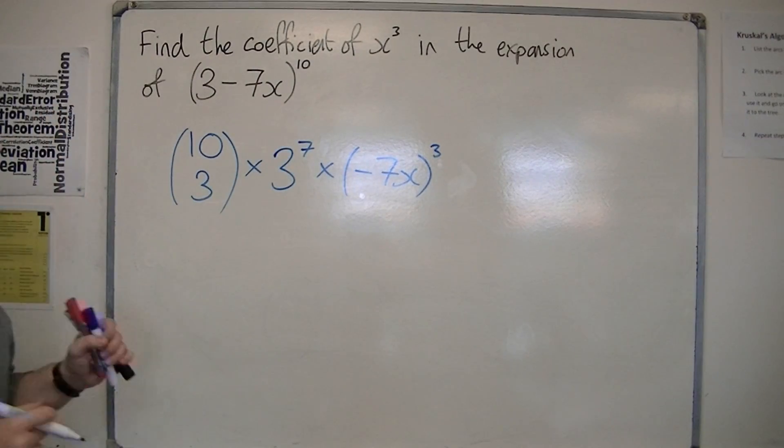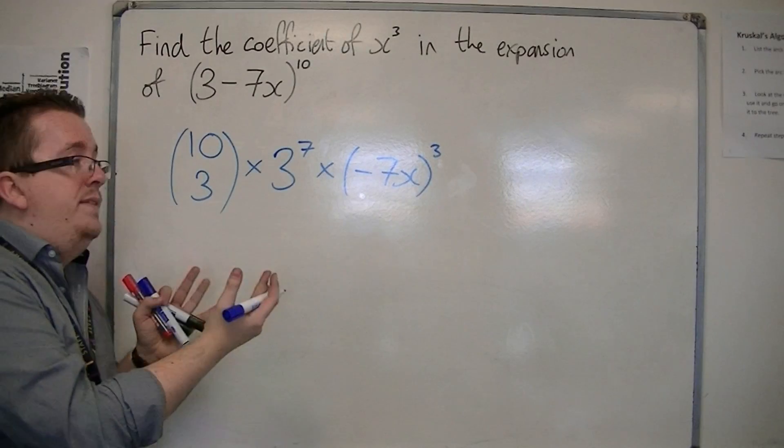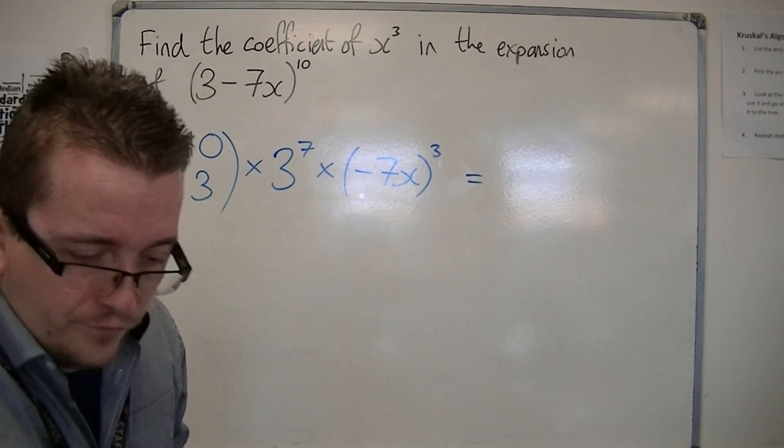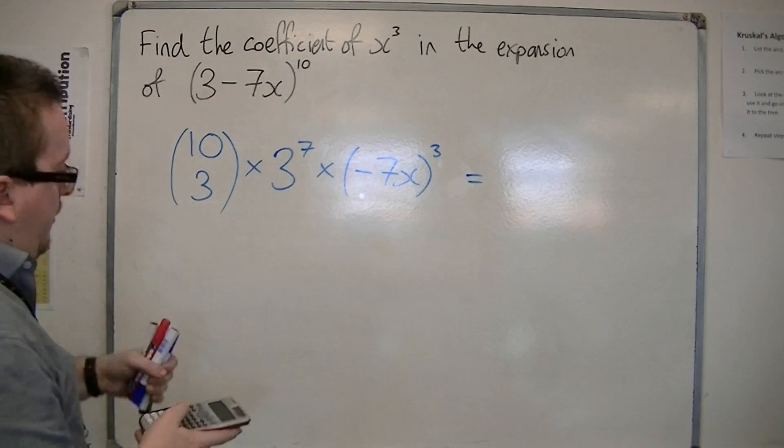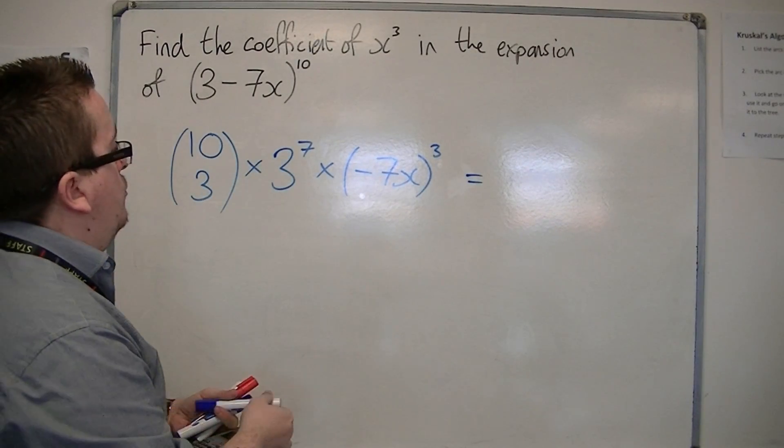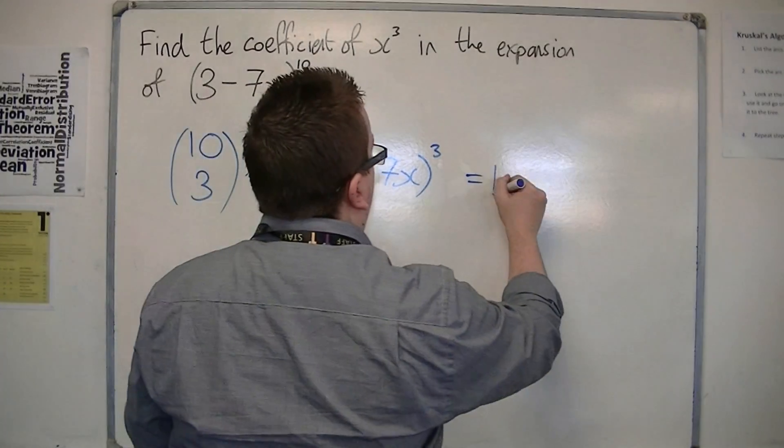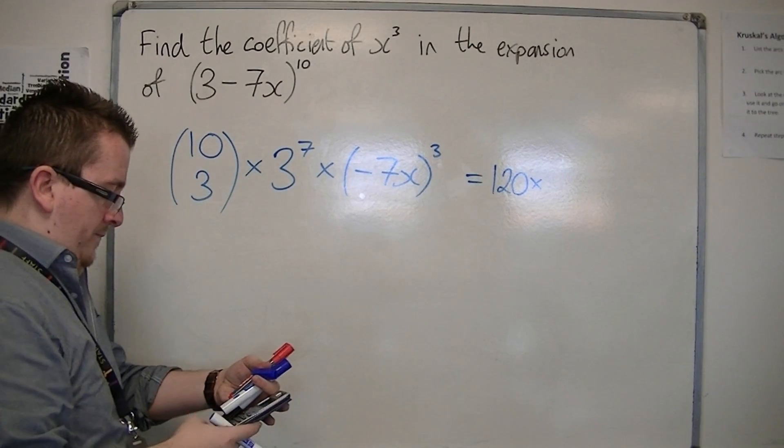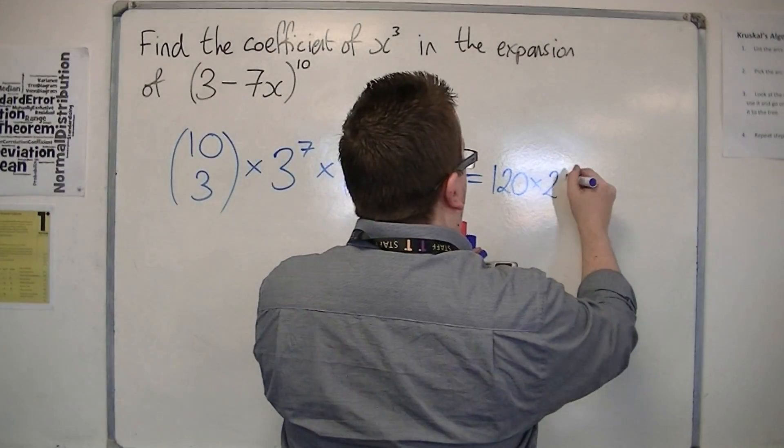So that would be the actual term in the expansion. So we've got 10 choose 3, 10 choose 3 is 120. We've got 3 to the power of 7, which is 2187.